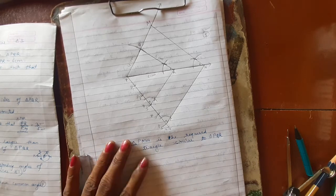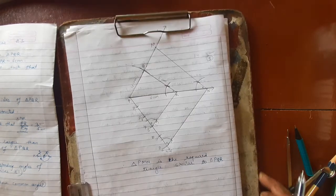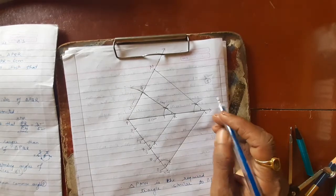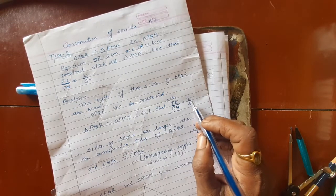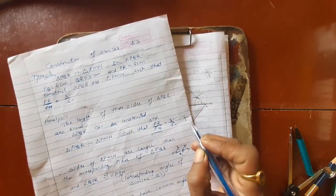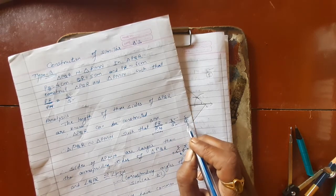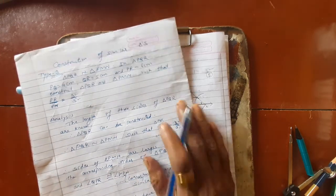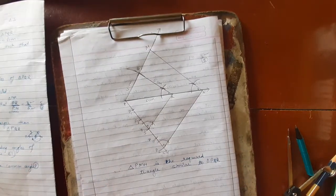Draw a line parallel — then only we will get the angle. Triangle PMN is the required triangle similar to triangle PQR. When the ratio is 3 upon 5, the triangle we are constructing is outside. Last time we studied 5 upon 3 — the triangle constructed will be inside because its parts are less. Keep that difference in mind. The construction is very easy. Now we will do one example.